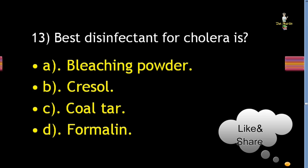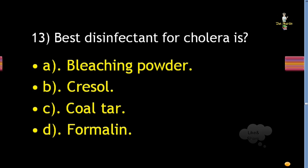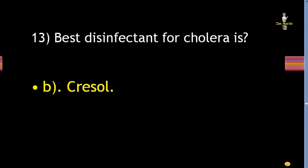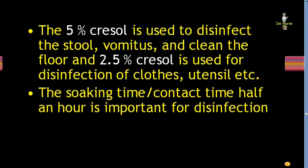Next question: best disinfectant for cholera is bleaching powder, cresol, coal tar, or formalin? Correct answer is cresol. Five percent cresol is used to disinfect stool, vomitus, and clean the floor. Two-point-five percent cresol is used for disinfection of floors, utensils, etc. The soaking time or contact time required for disinfection is half an hour.